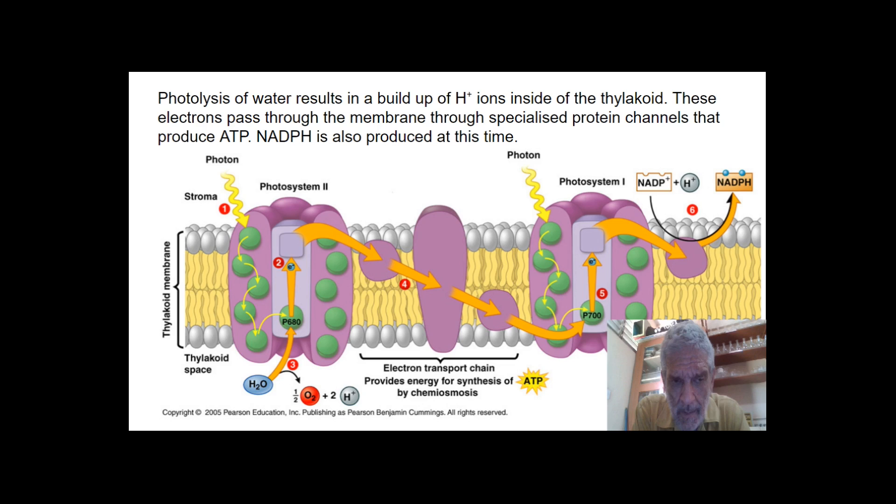As well as that, the photolysis of water results in the build up of H plus ions on the inside of the thylakoid. So this is the inside of the thylakoid and I'm going to have a large number of H plus ions here. These protons pass through the membrane. These are specialised protein channels that produce ATP. Protons or H plus ions. And when the H plus ions pass through this channel, ATP is produced.